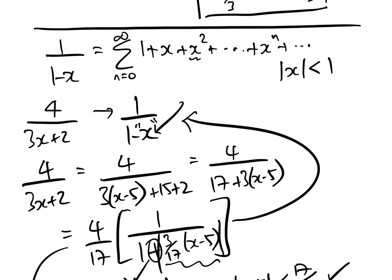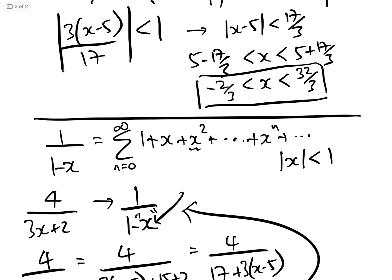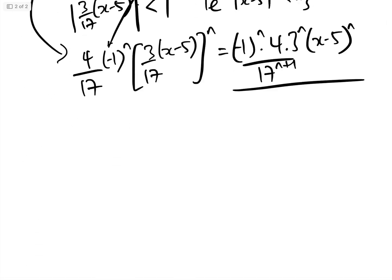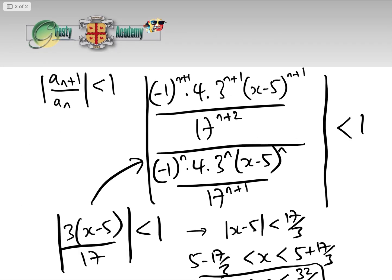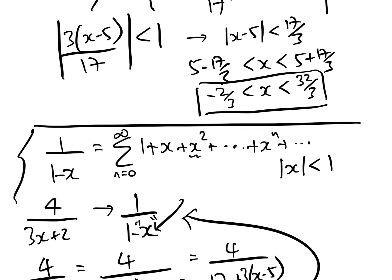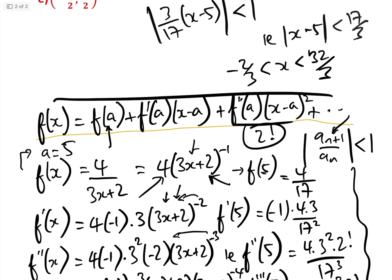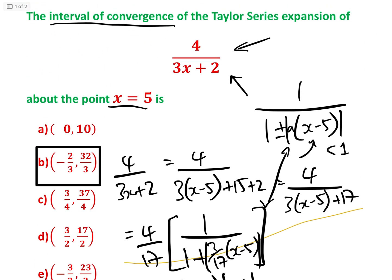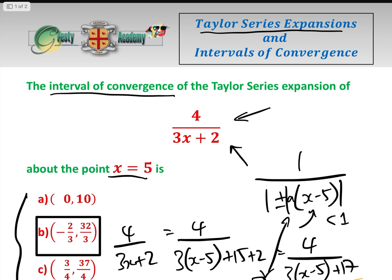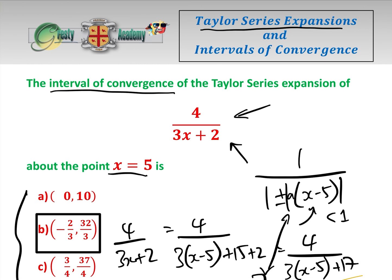If you weren't doing multiple choice and needed to show your working, doing it as a geometric series is far easier since you don't need any differentiation. But if the question specifically says to use the Taylor series expansion, then that's how you do it. If it's multiple choice, use any trick you can to save time — this is a really good one. If it just asks for the interval of convergence with working shown, the geometric series is probably the best way to go. I hope you found that useful — please like this video and subscribe to the Gresti Academy YouTube channel.